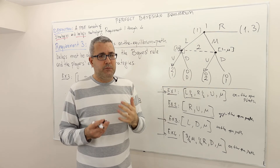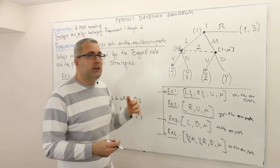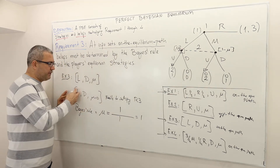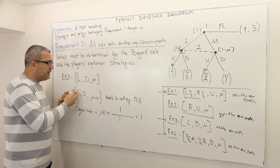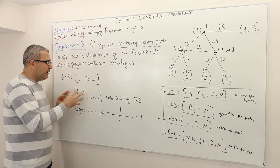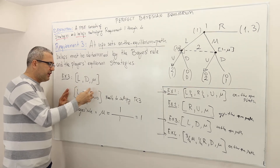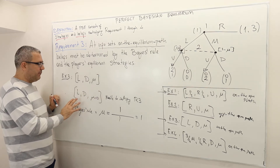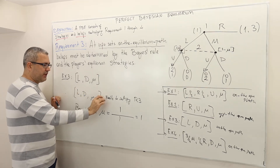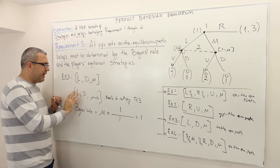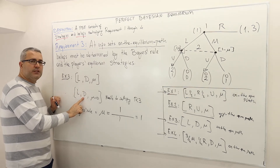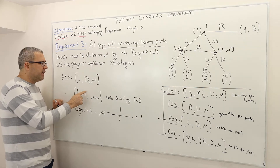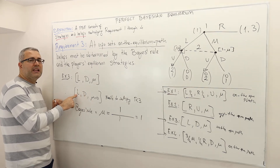Once you reach this information set, you will be holding some belief. One interpretation of the strategy profile is that we can read it as players' beliefs. When I look at this strategy profile, you can read it as: player one believes that player two is going to play D, and player two believes that player one is going to play left.